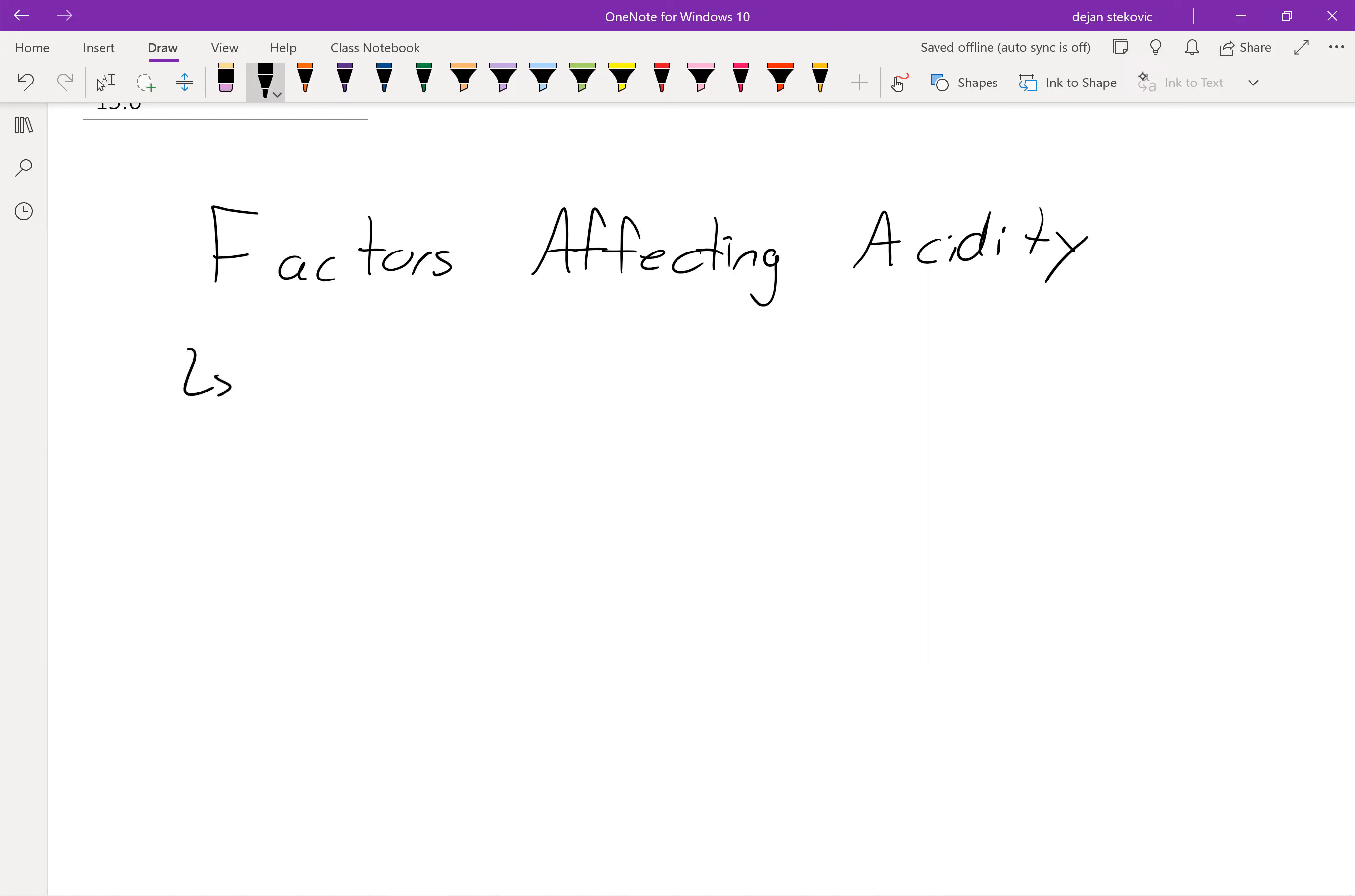So remember, the trick to this kind of stuff is to always think about the conjugate base. So when you deprotonate your alcohol, what do you get? If this conjugate base is very stable, then your compound is very acidic. If it's unstable, then it's not as acidic.